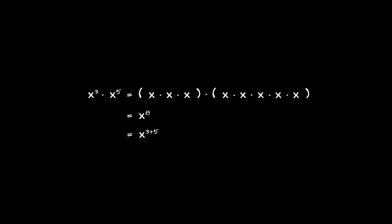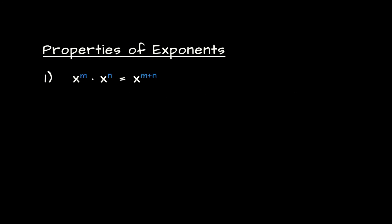This insight leads us to our first general property of exponents: if we multiply x to the power m times x to the power n, then the result can simply be written as x to the power m plus n. Here x is an arbitrary real number, and m and n are two natural numbers.